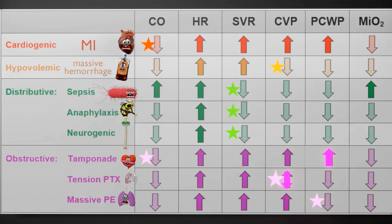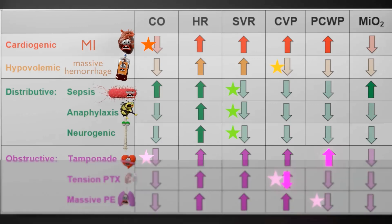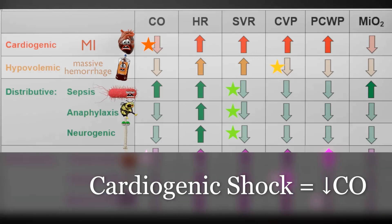In cardiogenic shock, there's going to be decreased cardiac output because the heart simply can't get as much blood out. So this is the parameter that we want to focus on in cardiogenic shock — reduced cardiac output — and this will be responsible for all the changes that we see.